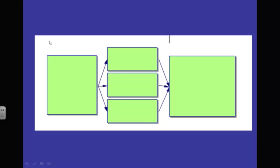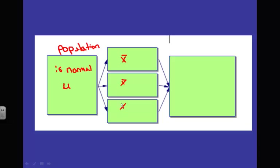Here's what you want to remember for this picture. You have your population. If they tell you the population is normal with some mean, and we take a whole bunch of samples, we wind up with a whole bunch of x-bars. If we add up all those x-bars and take the average, we find that the mean of all the x-bars equals the population parameter. And since we started off normal, x-bar also has a normal distribution.